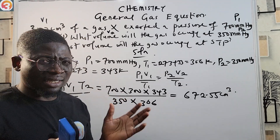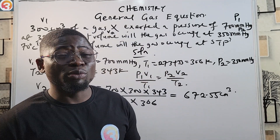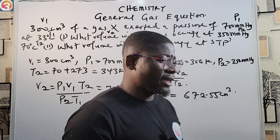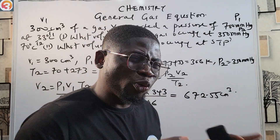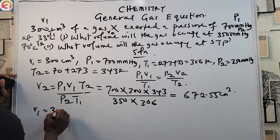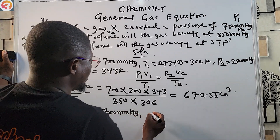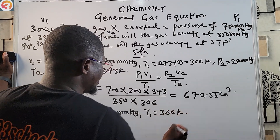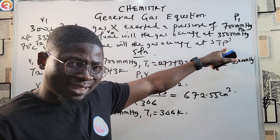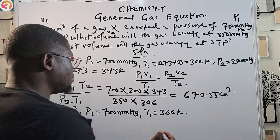Now let's look at the second part, which is a bit tricky. If you do not know standard pressure and standard temperature, you will fail this question. You must know — from our previous episode — what standard pressure is, what standard temperature is, what room temperature is, and what body temperature is in Kelvin. The question asks: what volume will the gas occupy at STP? V1 is still 300 cm³, P1 is 700 mmHg, and T1 is 306 K.